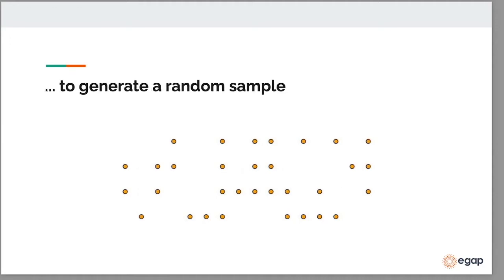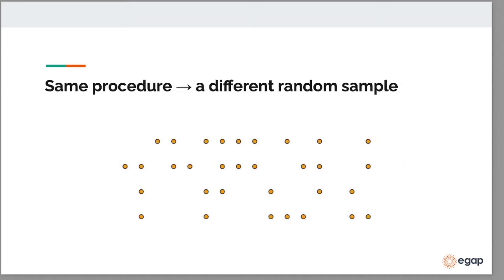The resulting sample is this collection of orange dots. It is the set of units from the population that you've selected in this way. And if you repeat the random sampling procedure, you're very likely to end up with a different sample like we did.